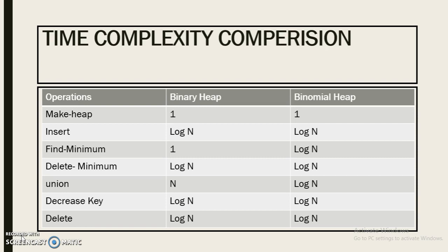There is no time complexity difference for delete minimum operation, decrease key operation, and deletion operation. For union operation, binary heap takes order of n time, but binomial heap takes log n time. This is the major advantage of binomial heap over binary heap. Hope all your concepts regarding binomial heap are clear now. Thank you.